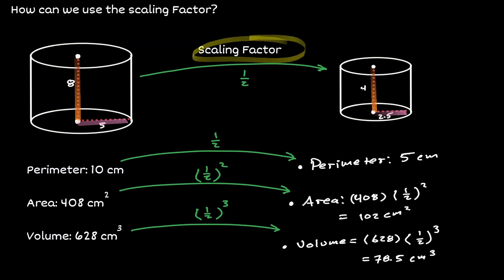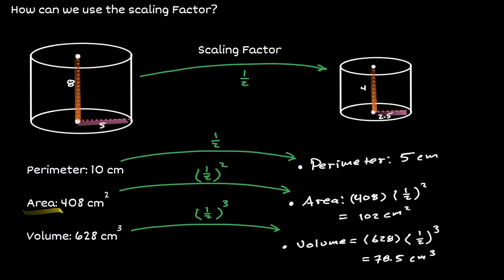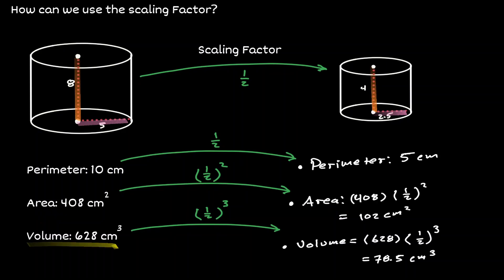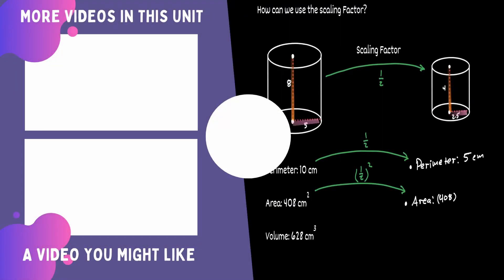Notice how we can use the scale factor between two similar figures. By knowing the perimeter of one figure, we can find the perimeter of the similar figure by multiplying by the scale factor. If we know the volume of one figure, we can obtain the volume of the similar figure by multiplying by the scale factor to the third. If you would like to continue learning about mathematics, you can check out the videos on the left.